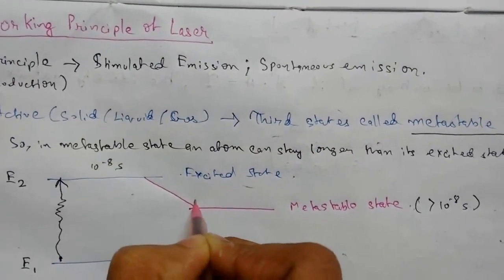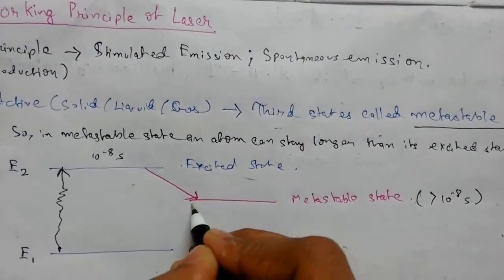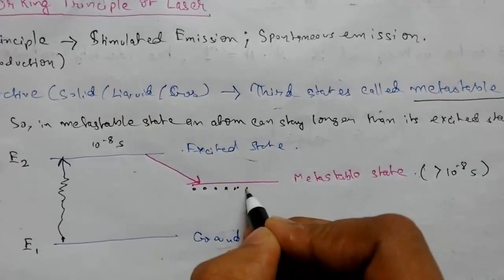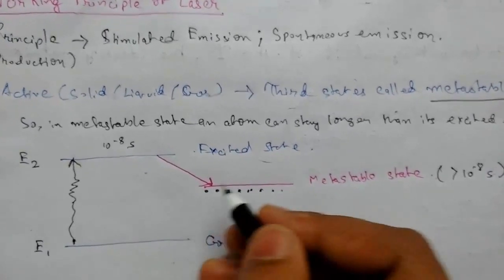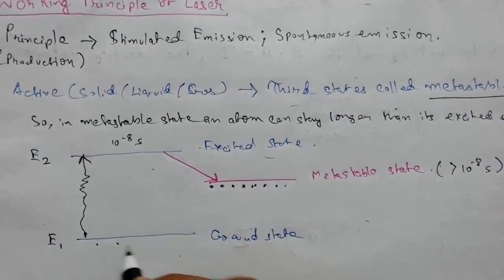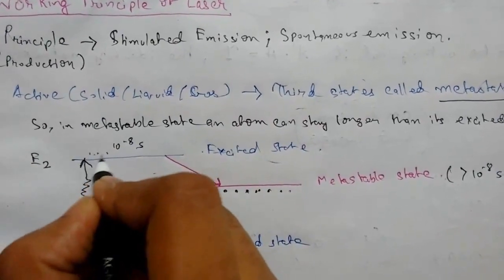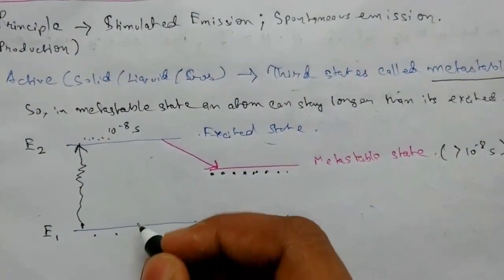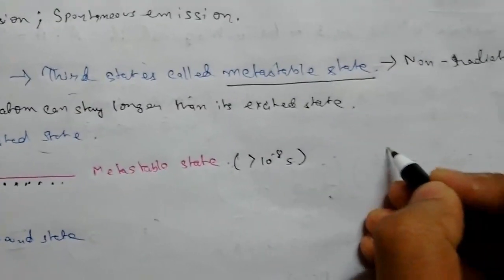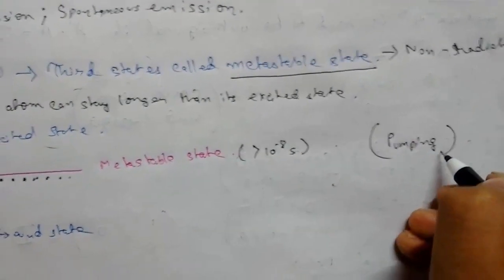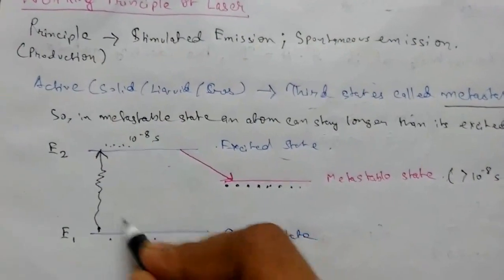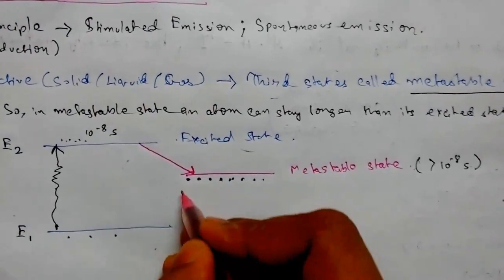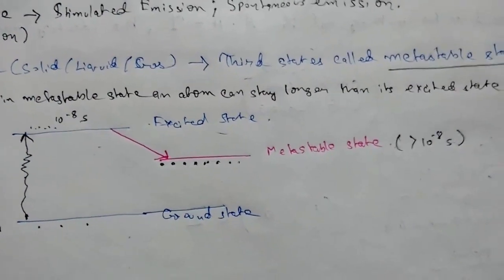So here atoms will get trapped. A large number of atoms will be trapped in the metastable state, while in the ground state there will be very few atoms. There will be more atoms in the metastable state provided that the pumping of light is intense enough. Pumping is an important term. The whole process of this is known as population inversion.